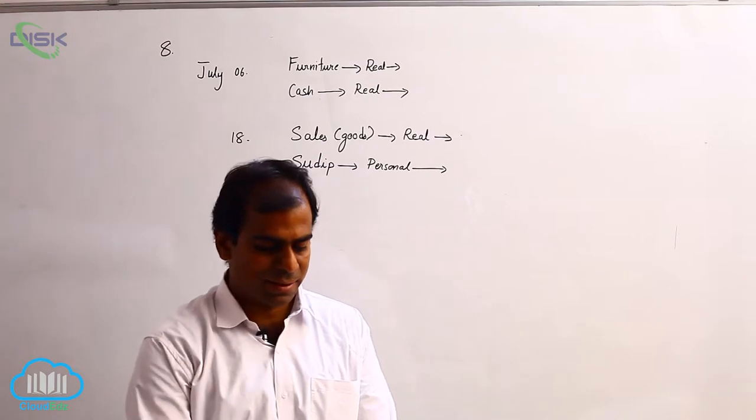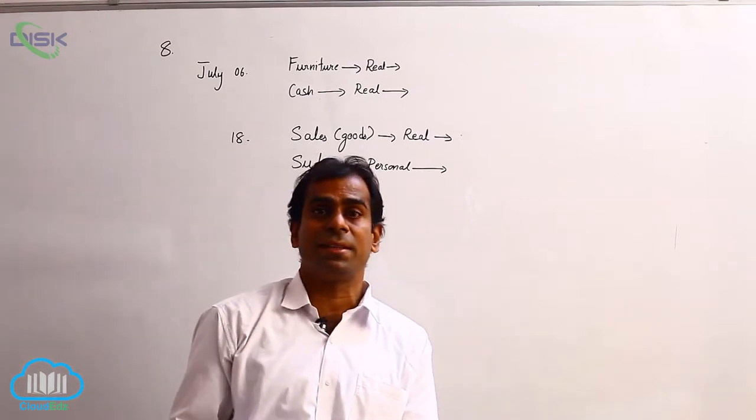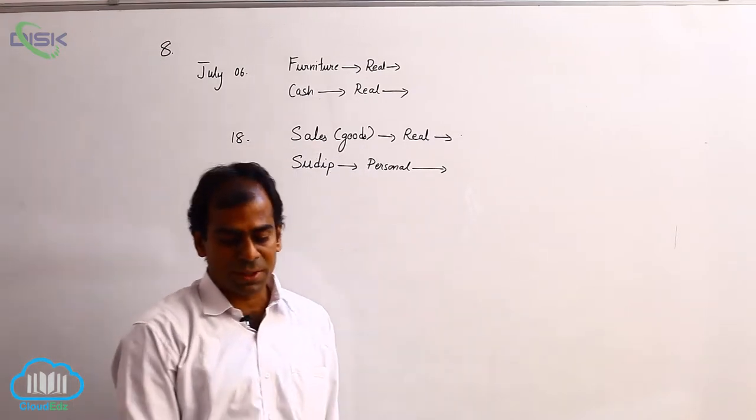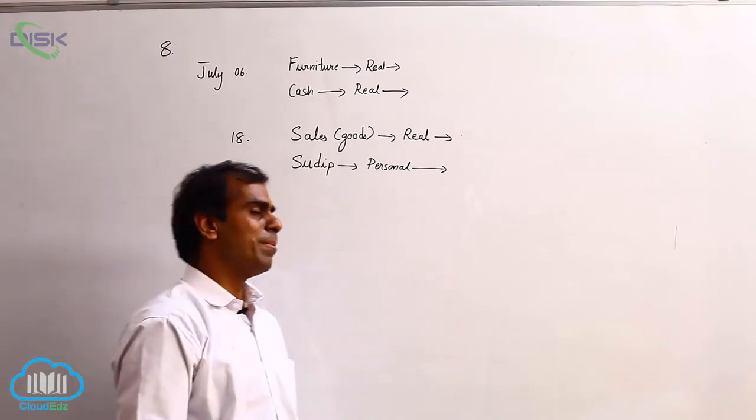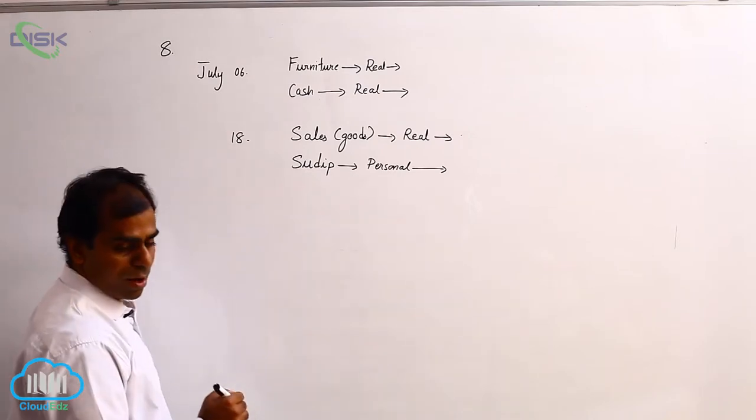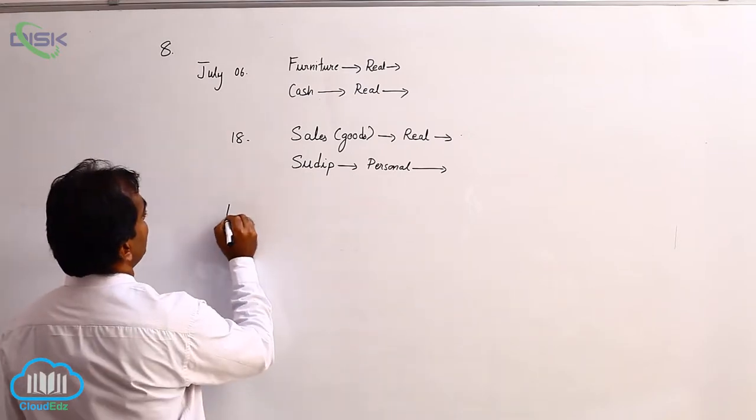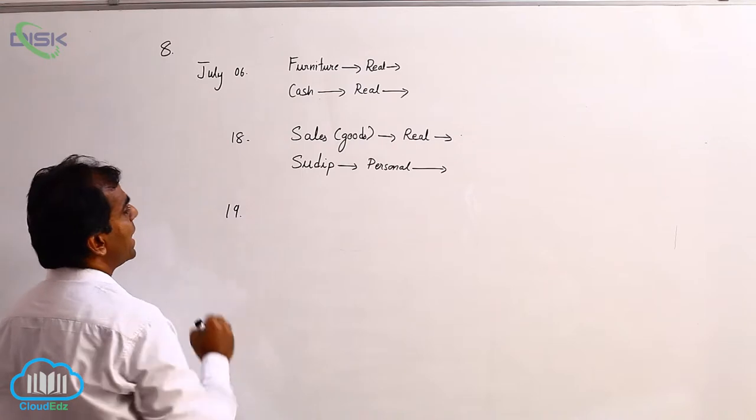Now coming to the next transaction, which is on 19th, which states that goods returned from Sudip. It is goods returned by Sudip, make a correction. So on 19th we have goods returned by Sudip.